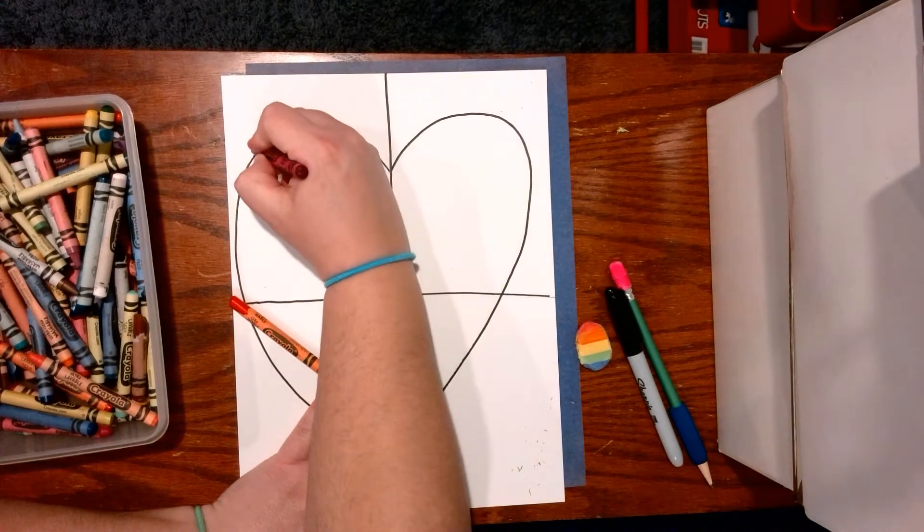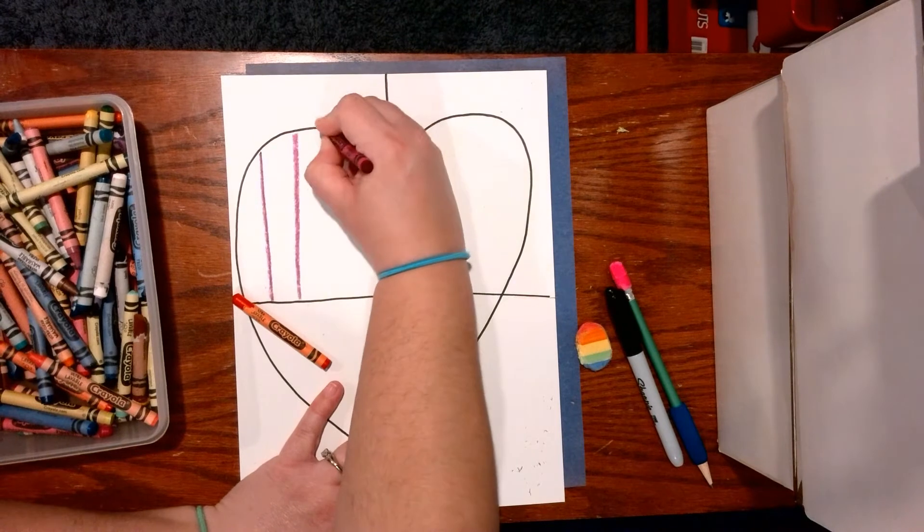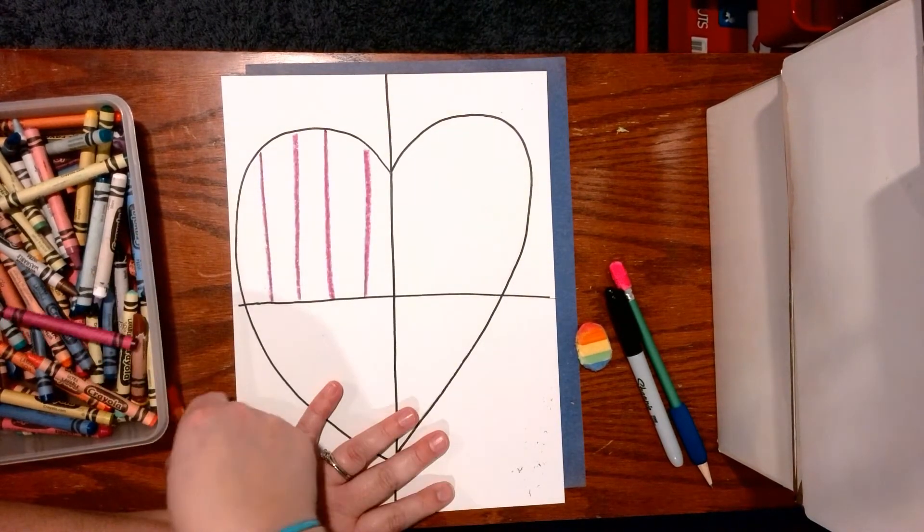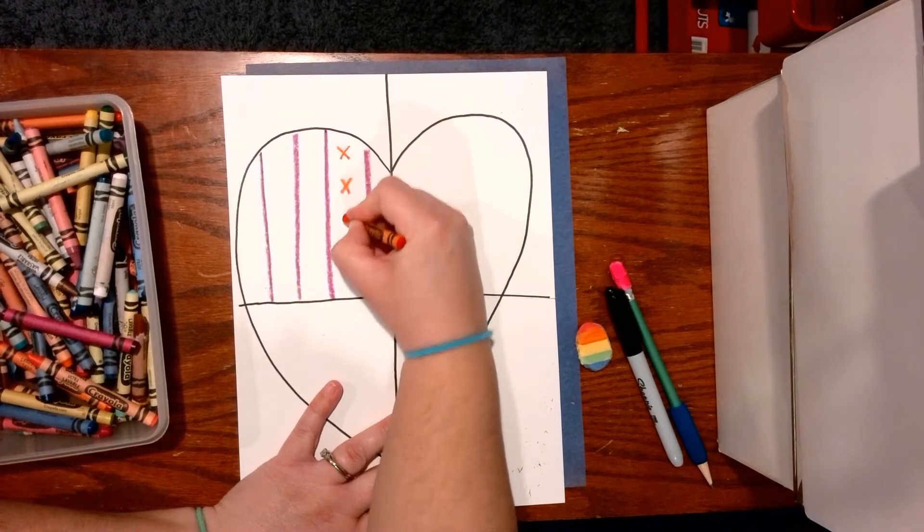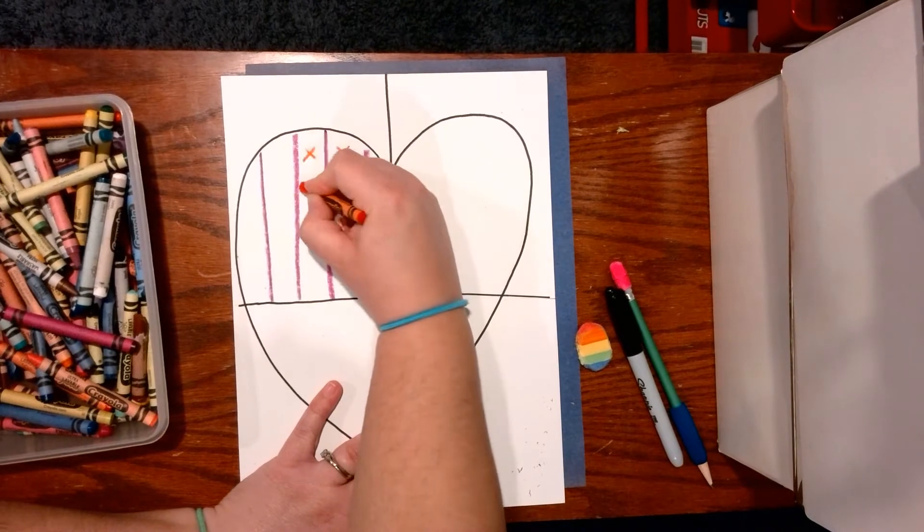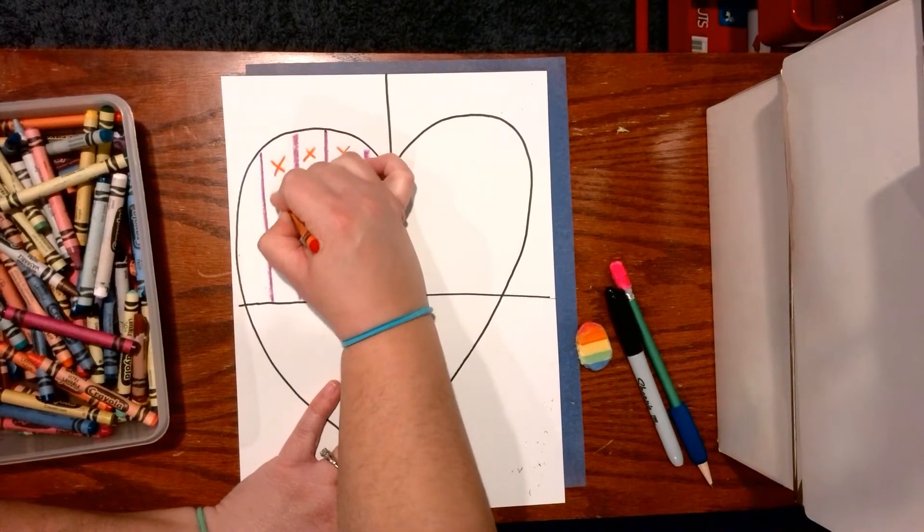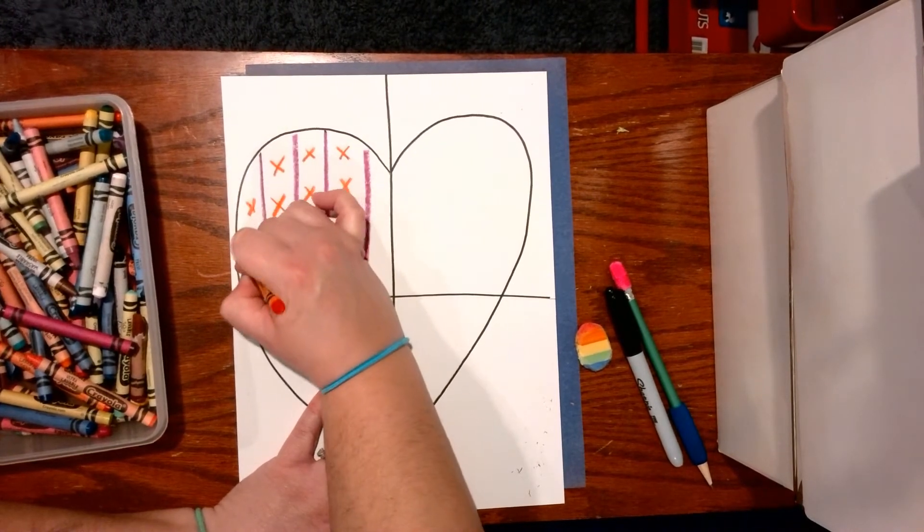So it could be a line. So maybe I do straight lines with my pink and then I could repeat something else in between them. And I'm pushing really hard with my crayon because I want those colors to be really, really dark and bold.